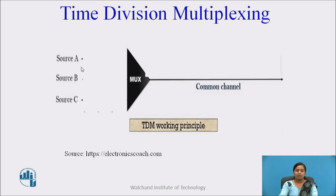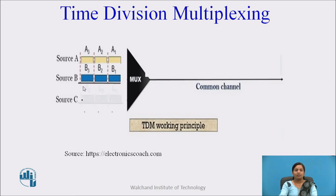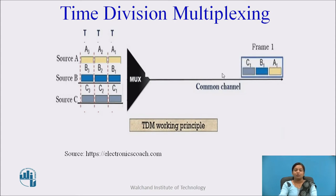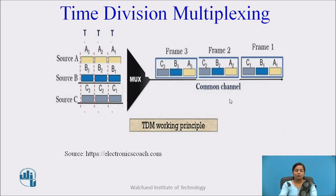In TDM, the data of source A is divided into three units: A1, A2, and A3. Similarly, for B, data is divided into B1, B2, B3, and for C, data is divided into C1, C2, and C3. Then, one unit from each source is collected and these units are combined to form a frame. These frames are transmitted over the same communication channel using the same bandwidth.